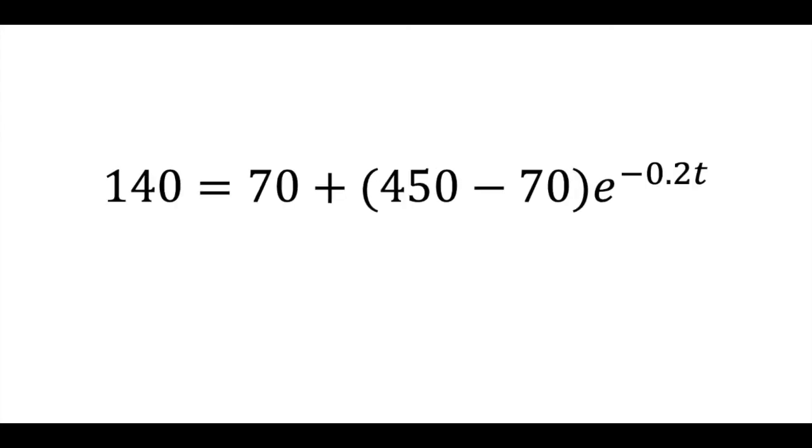Take this and sub it into our final setup, where our target temperature is 140 degrees. 140 equals 70 plus 450 minus 70 times E to the negative 0.2T.